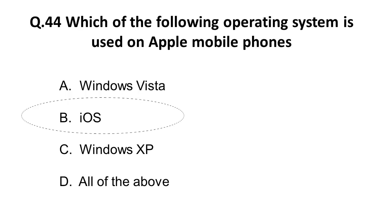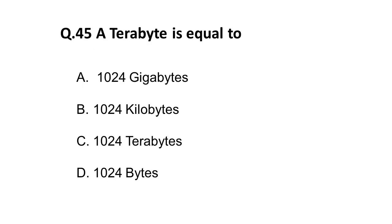The next question: a terabyte is equal to? As we have seen, gigabyte is smaller than terabyte. One terabyte is equal to 1024 gigabytes. You must memorize all the relations between different memory units.